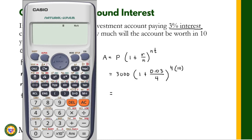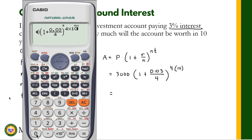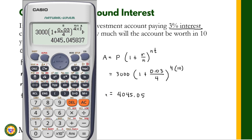Let's use our calculator to solve. That's 3000 times (1 + 0.03/4) raised to 40. The result is $4,045.05. Rounded to two decimal places — to the nearest cent — the account will be worth $4,045.05 after 10 years. That's how we compute the account value using the compound interest formula.